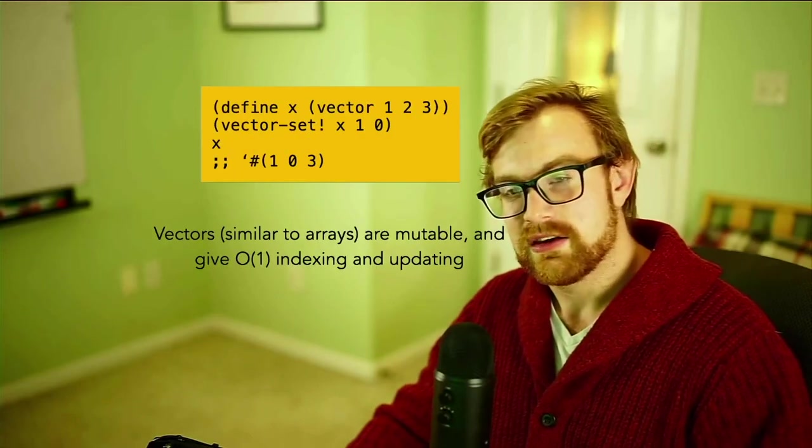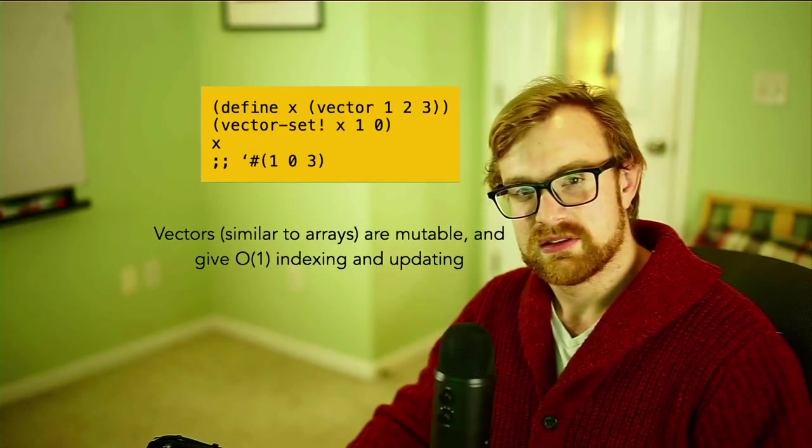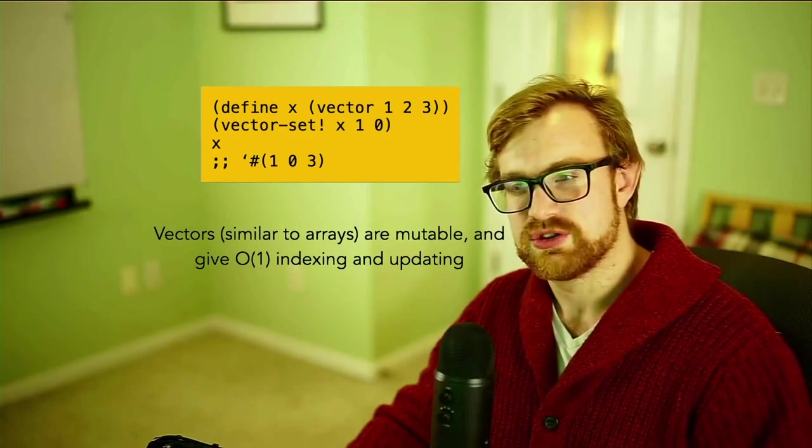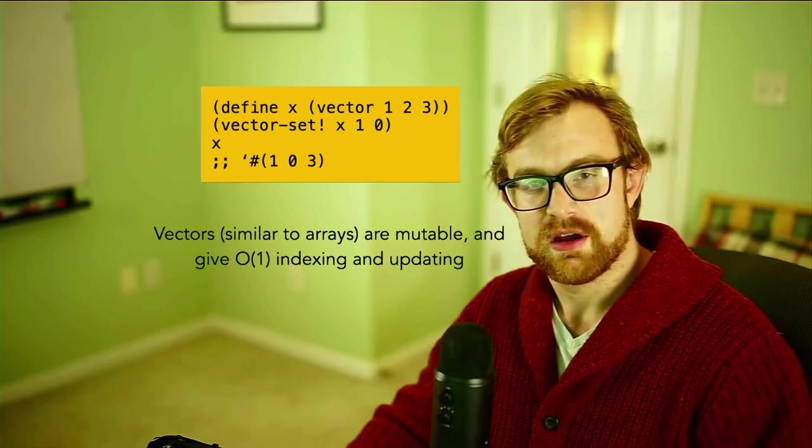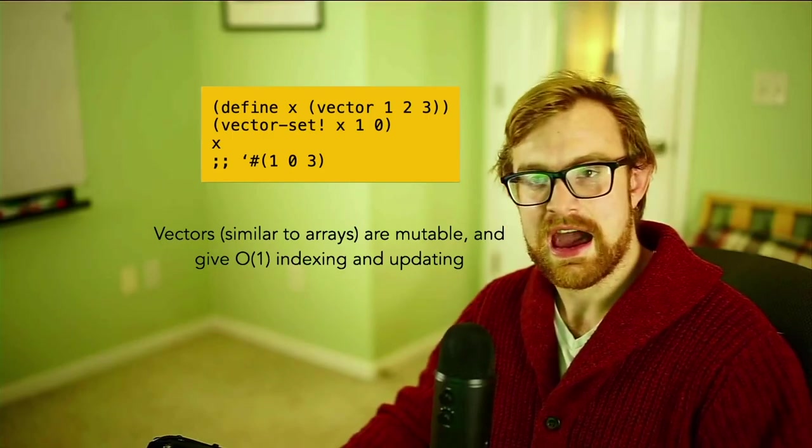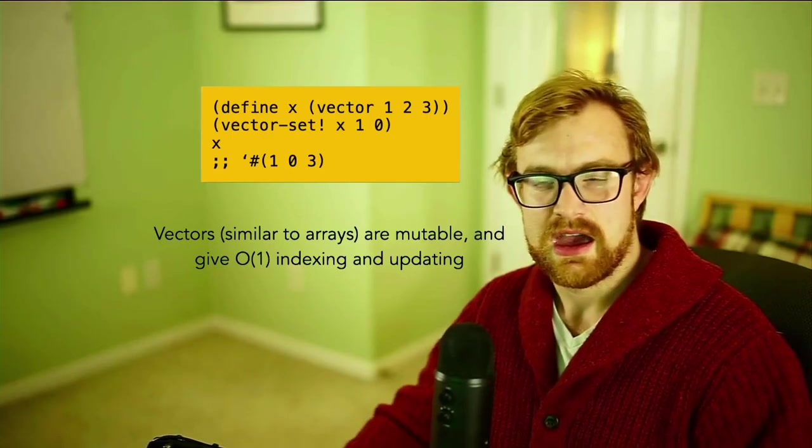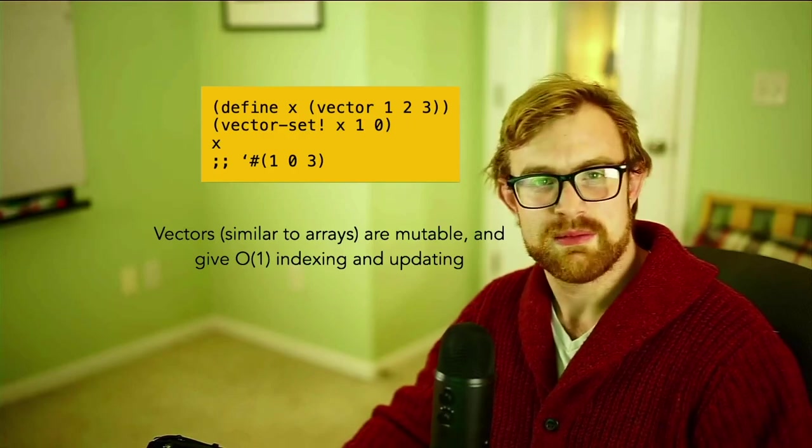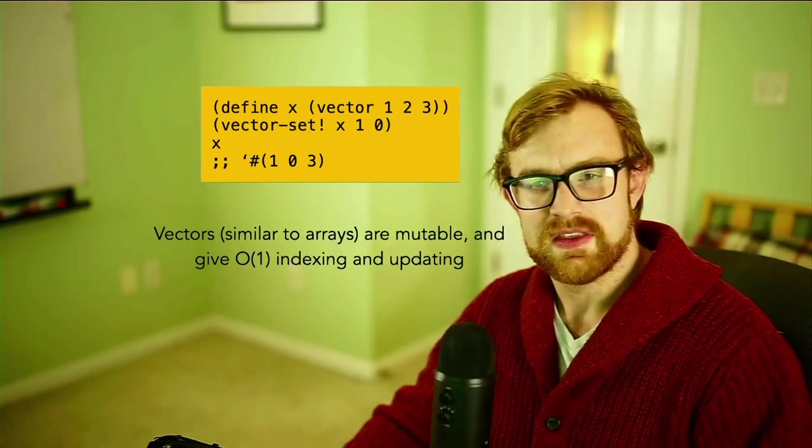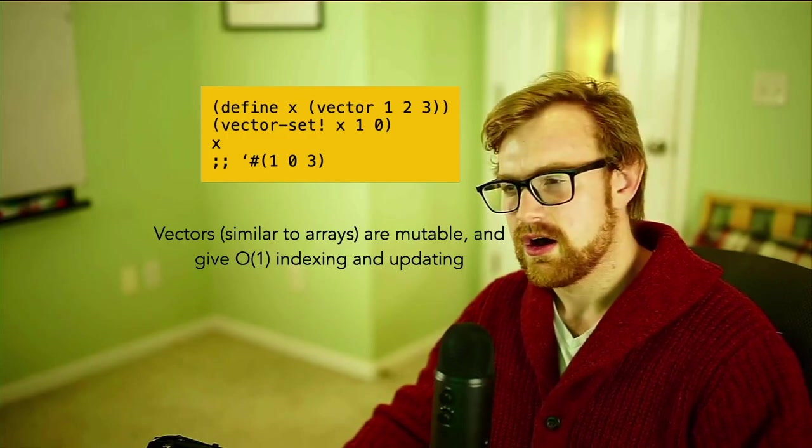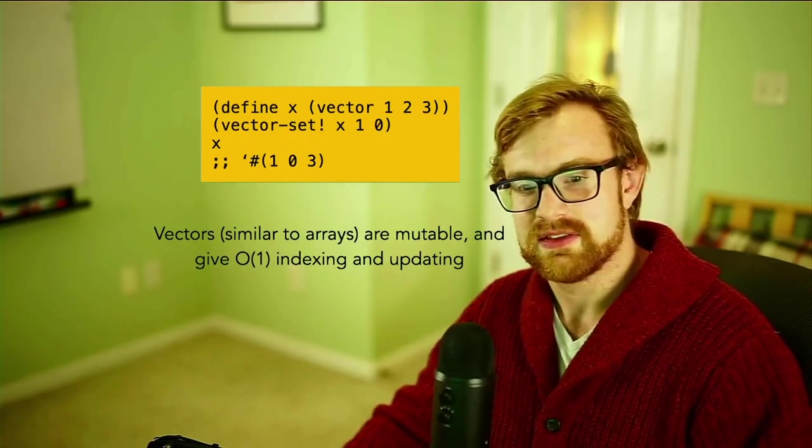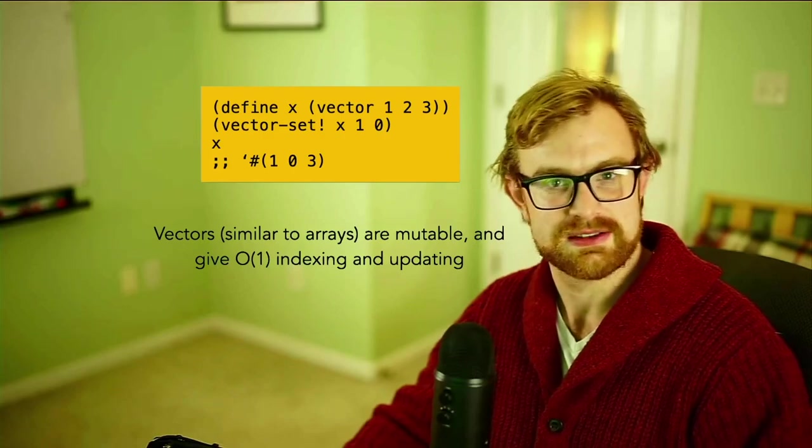Now Racket also has what are called vectors. Vectors are very similar to arrays in C and C++ type languages. They're mutable, contiguously accessed sequences. And they give us constant time indexing and updating. And this can be very crucial for the implementation of some algorithms. Although we won't be doing too much with that in this class. It is important to know that they exist.